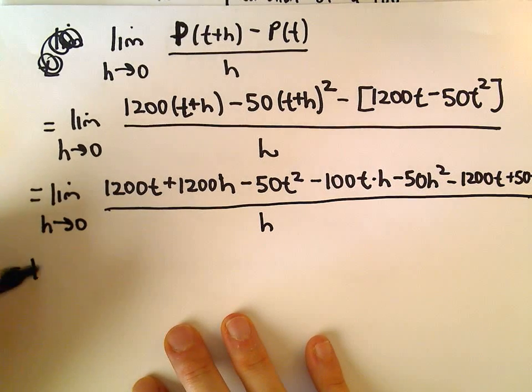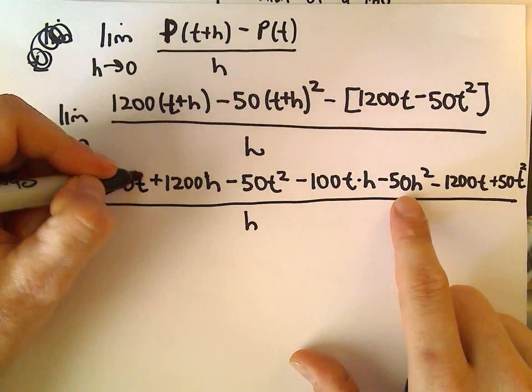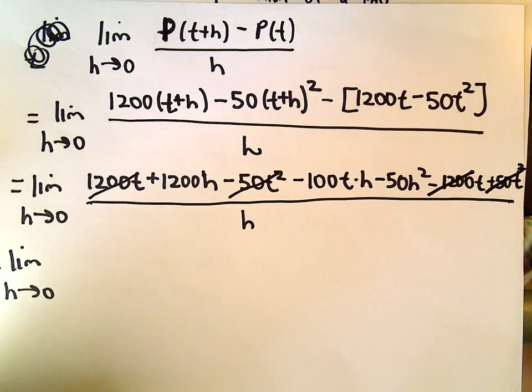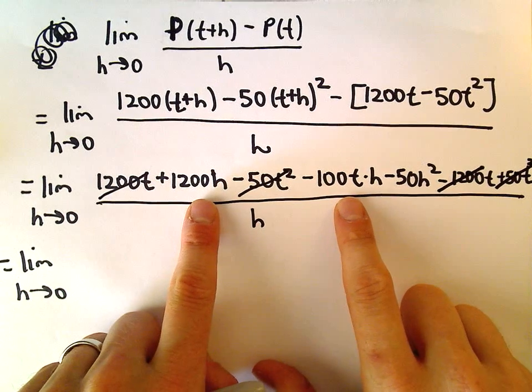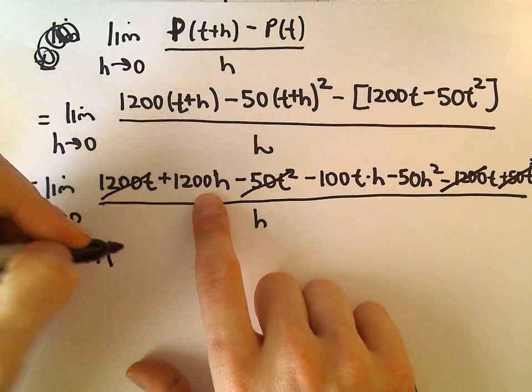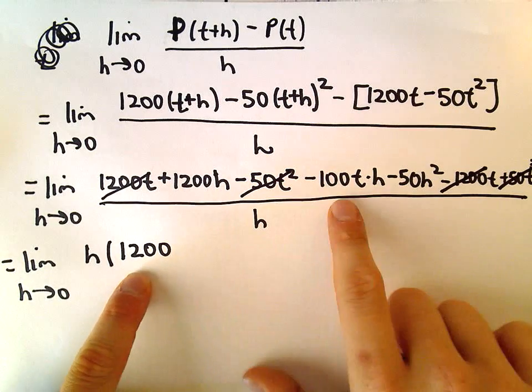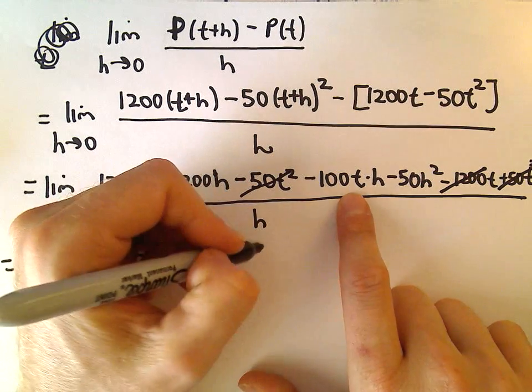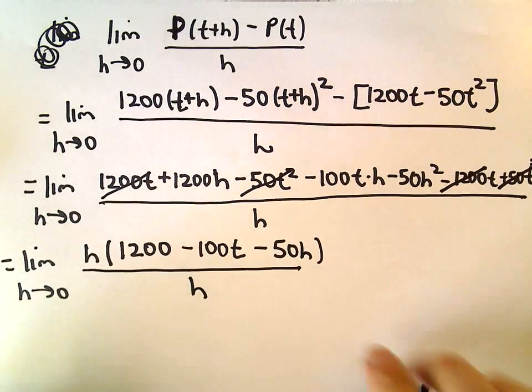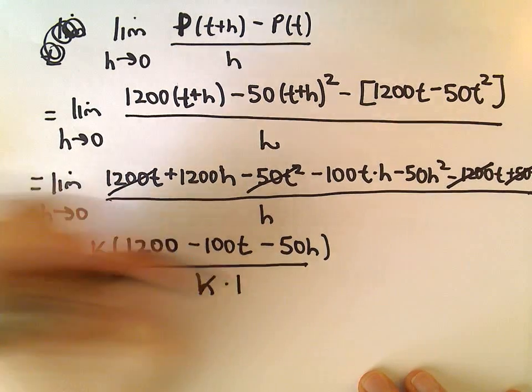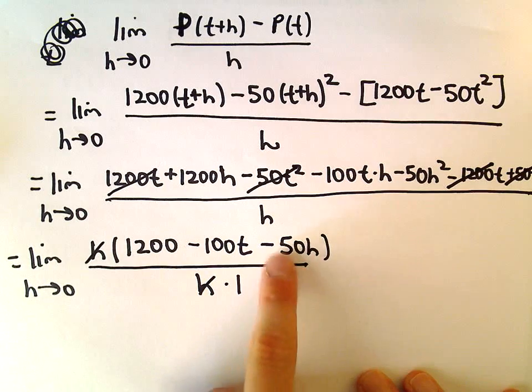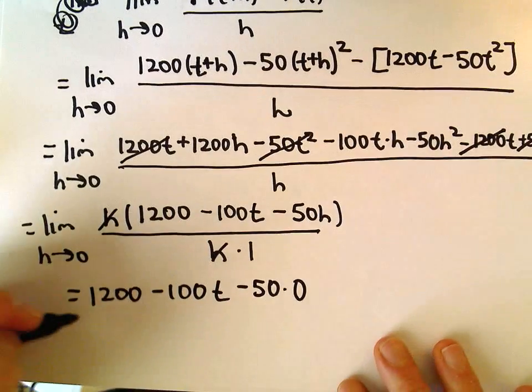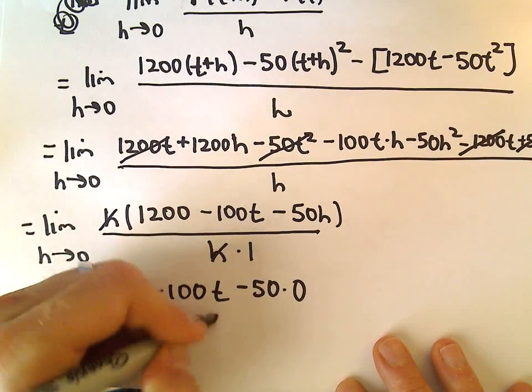Now we can simplify the numerator. The limit as h approaches 0, our 1200t would cancel out with -1200t. The -50t² would cancel out with +50t². What I'm going to do next is factor the h out, so I could pull the h out and then multiply that by 1200 to get our 1200h. We could multiply by -100t to get our second term, and then we would have -50h, all divided by h. We can cancel out our h's. Now if we plug in h=0, we'll be left with 1200 - 100t - 50·0, or we'll finally have our derivative 1200 - 100t.